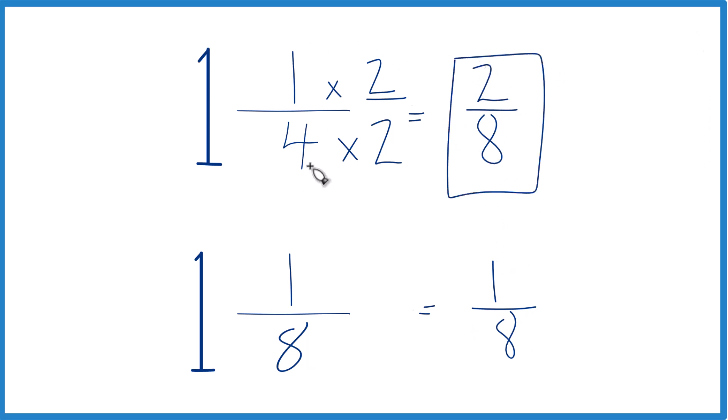And 2/8 and 1/4 are the same. 1/4 is larger than 1/8. And then we know that 1 and 1/4 will be larger than 1 and 1/8. That's it.